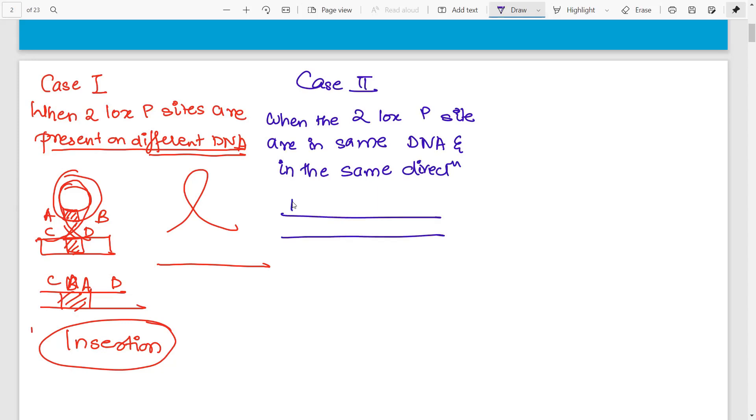For example, you have this particular segment of DNA where you have genes D, A, B, and C. Here you have the first LOXP site and the second LOXP site.